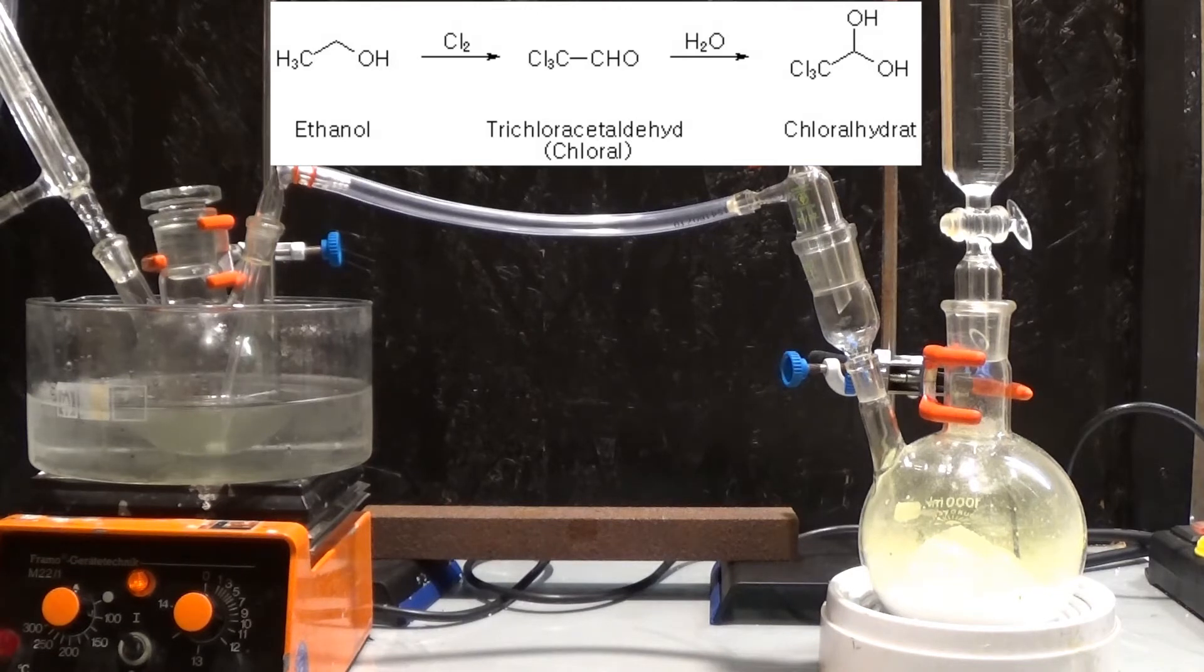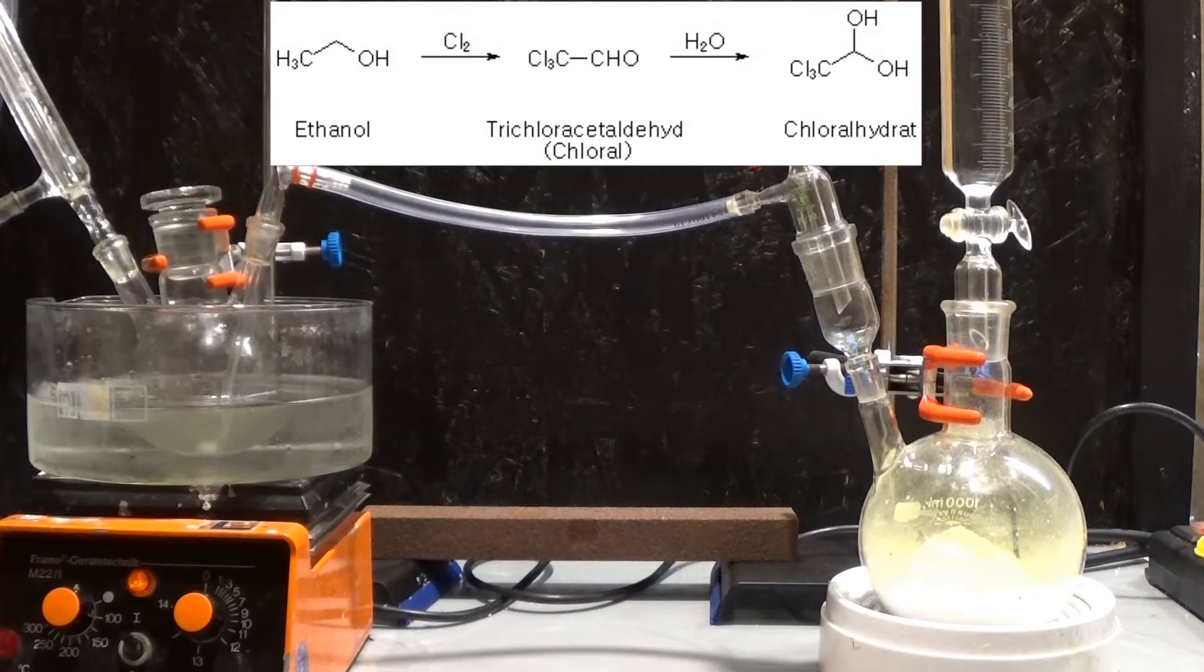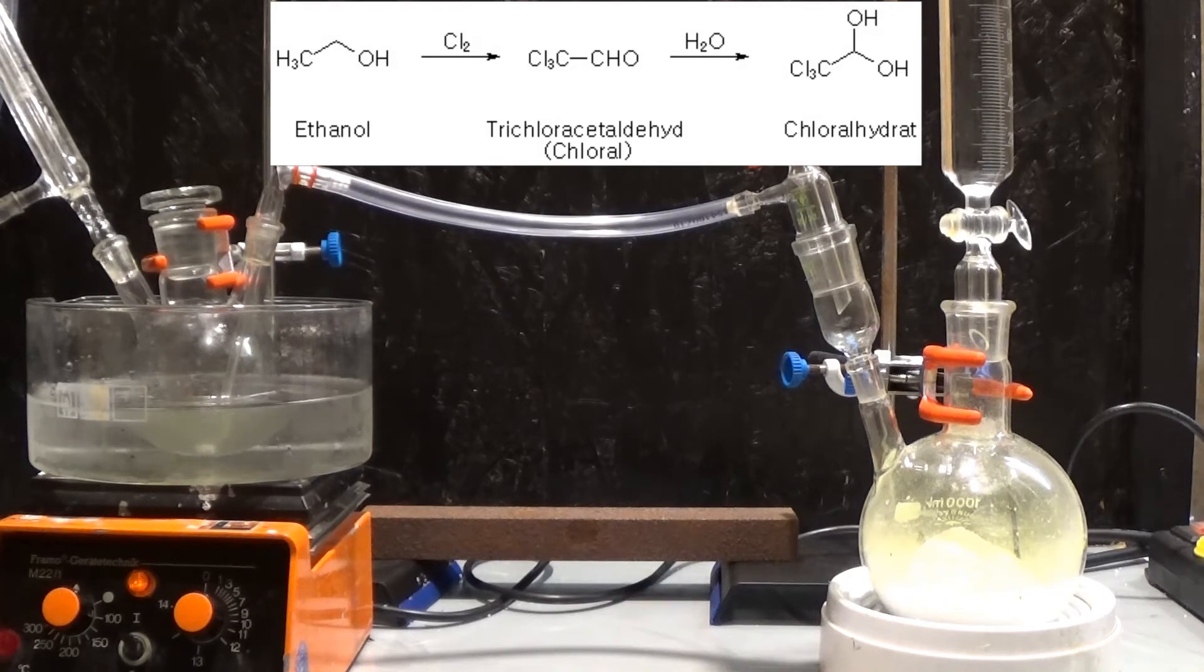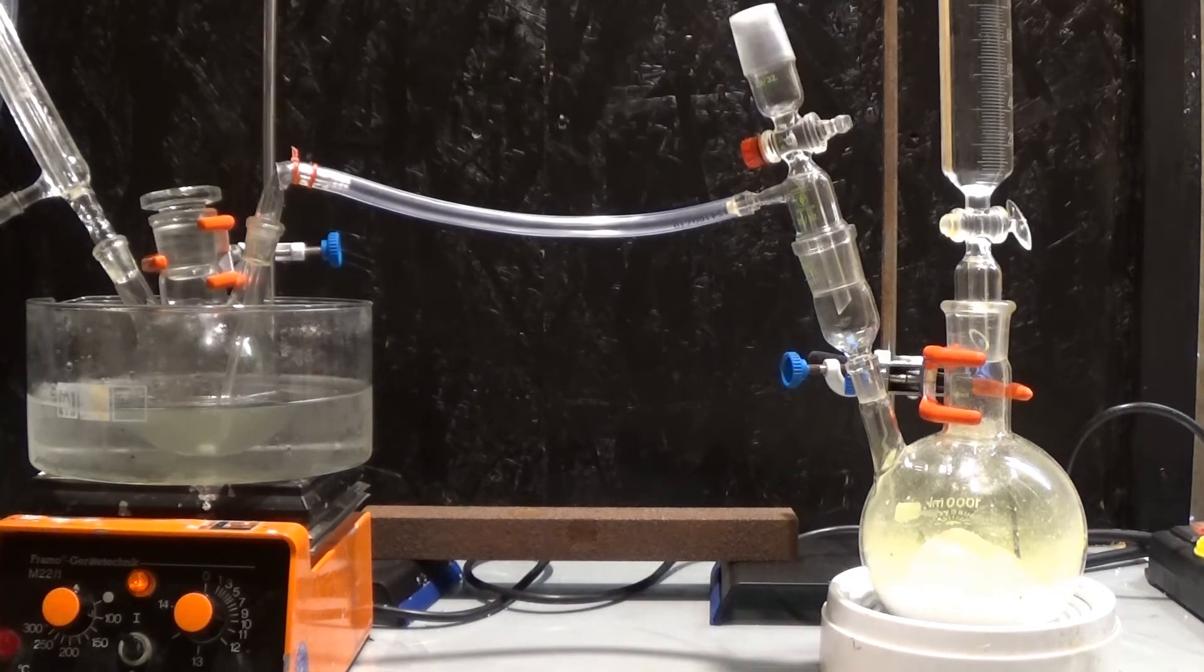With each chlorination a molecule of hydrogen chloride forms. Now the problem is that the secondary step where the trichlorinated aldehyde is formed is not explained anywhere, or at least I did not find it. I can just assume that it may be some kind of intramolecular rearrangement.